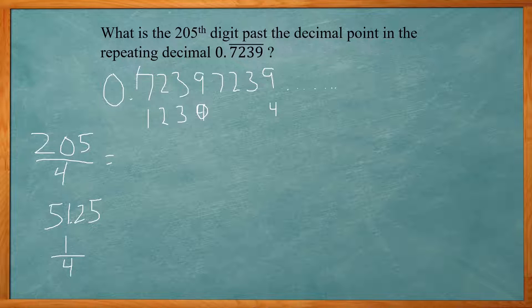So since I have a remainder of 1, this can be 7 would be the 205th digit since it repeats. So every time I have a remainder of 1, it'll be a 7 digit.